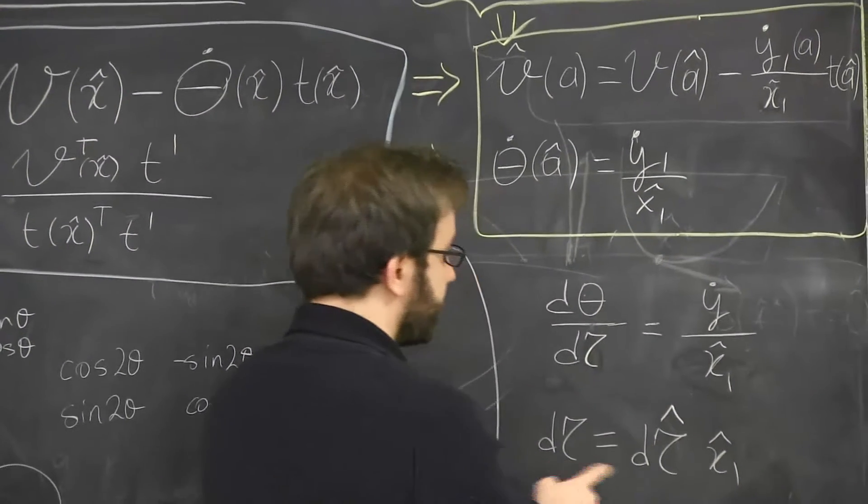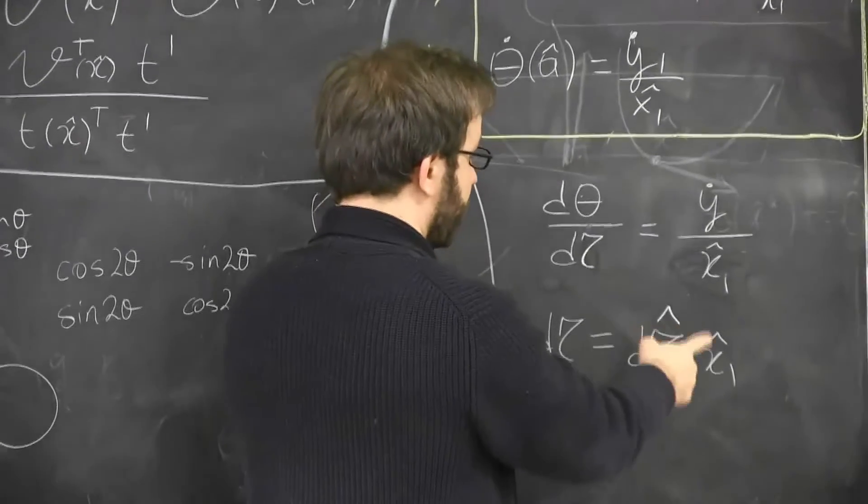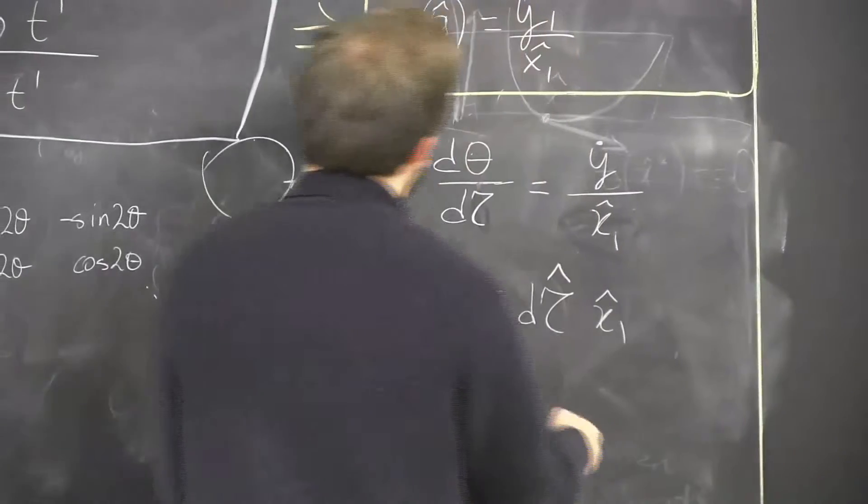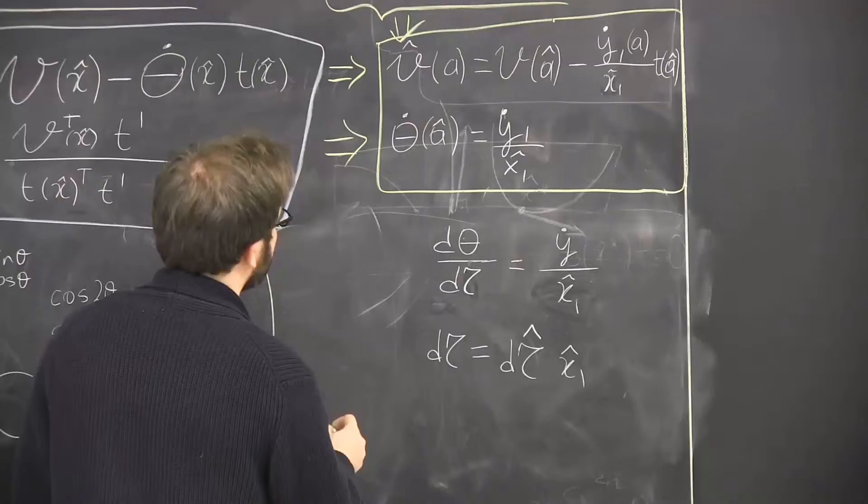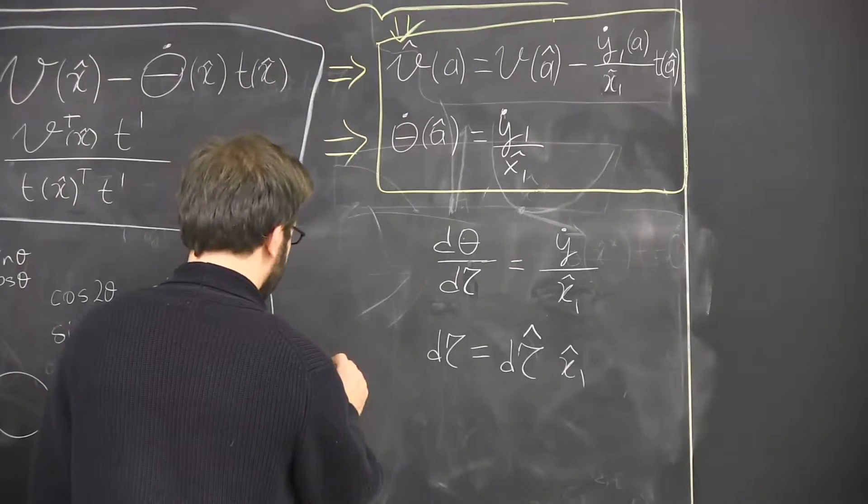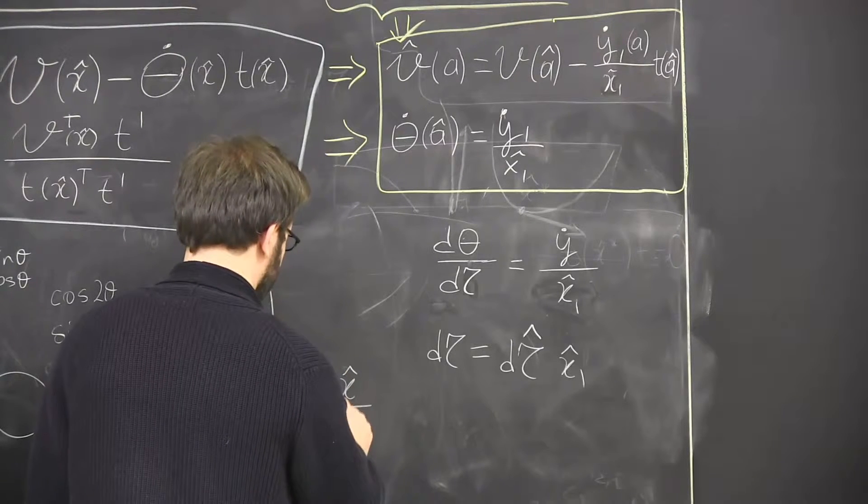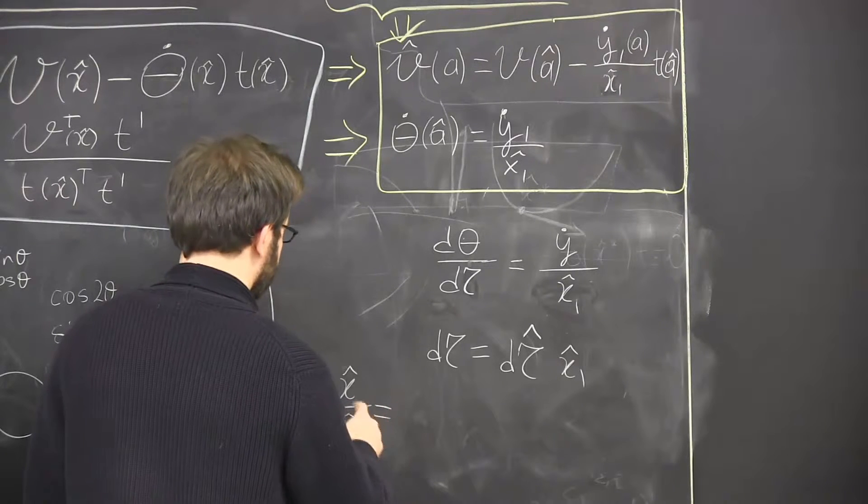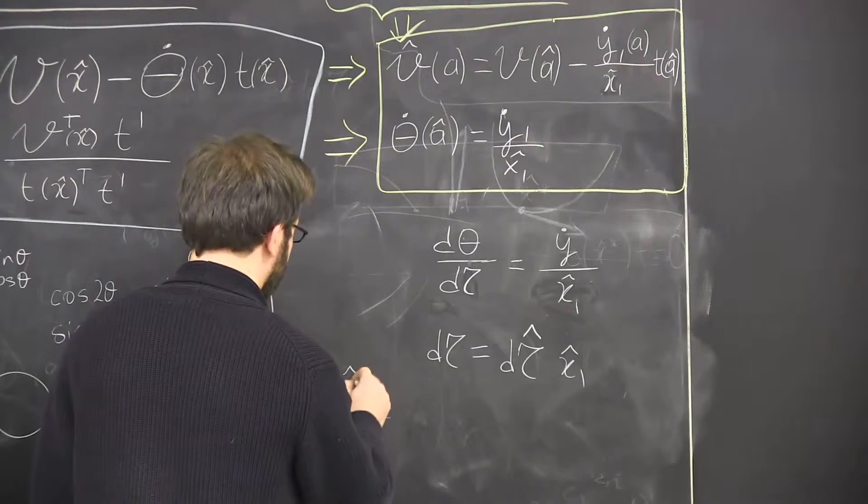I'll just replace d tau with d tau hat x hat. Then I have a new dynamical system and my new dynamical system will look like this.